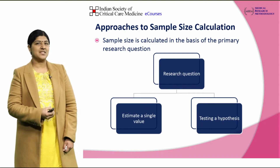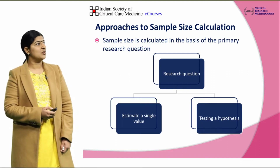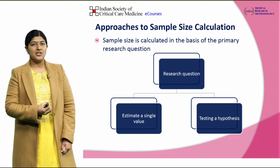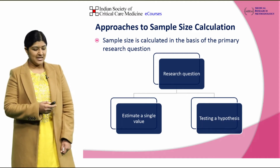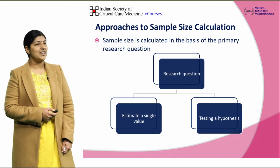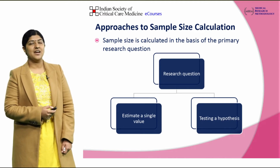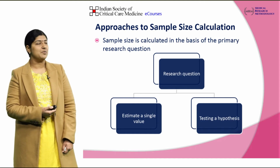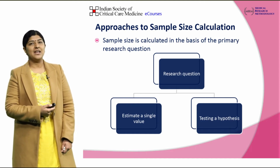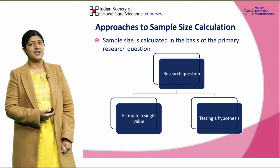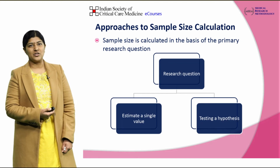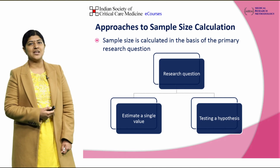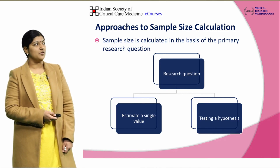How do you approach sample size calculation? Sample size calculation is often based on the research question of interest. Usually in clinical studies, the research question is of two types. One is where you would be trying to estimate a single value of interest — it could be a mean like systolic blood pressure, or it could be a proportion like prevalence of diabetes. The other type is testing of hypothesis, which could be to test the effect of a new treatment or to examine the association between a risk factor and an outcome of interest.